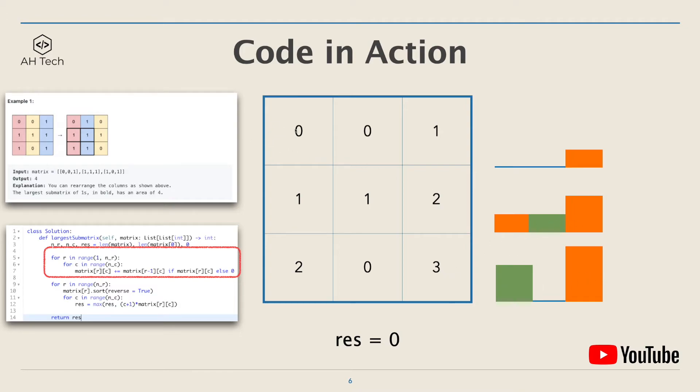And next, we will iterate through the rows. And starting from the first row, we will reverse sort the row in descending order. So now the first row will become 1 0 0. And the maximum sum matrix area we can get is 1. So we will update rest to 1 here.